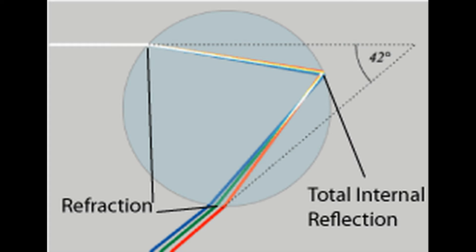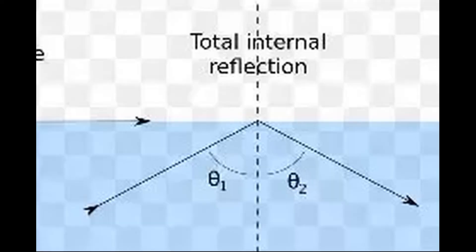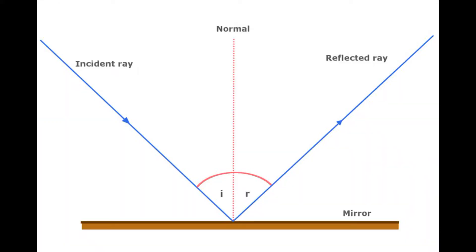Total internal reflection is the phenomenon where the angle of incidence is greater than the critical angle. In order to learn more about total internal reflection, we must first know the meaning of terms like the incident ray, reflected ray and the basic laws of refraction.